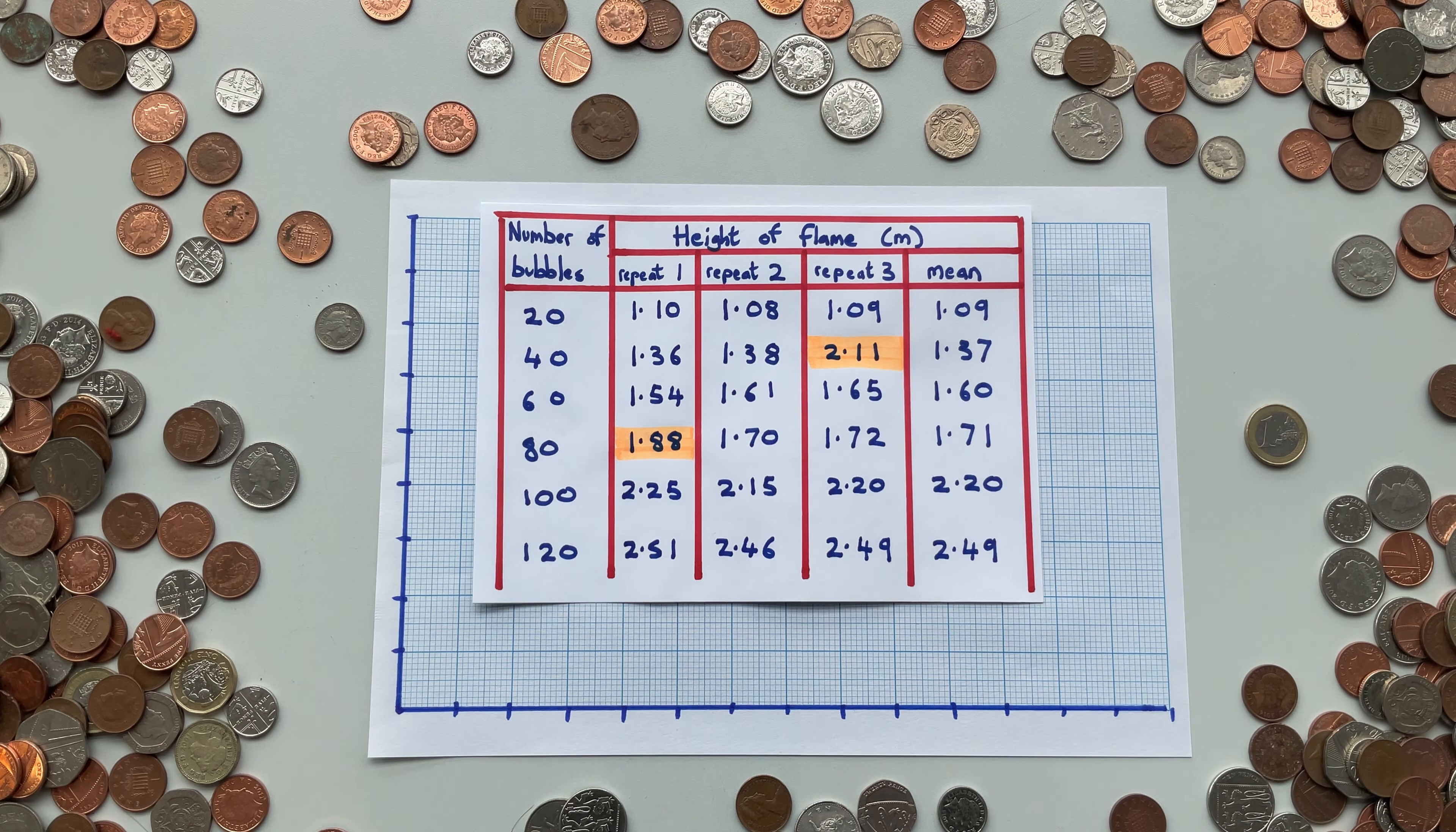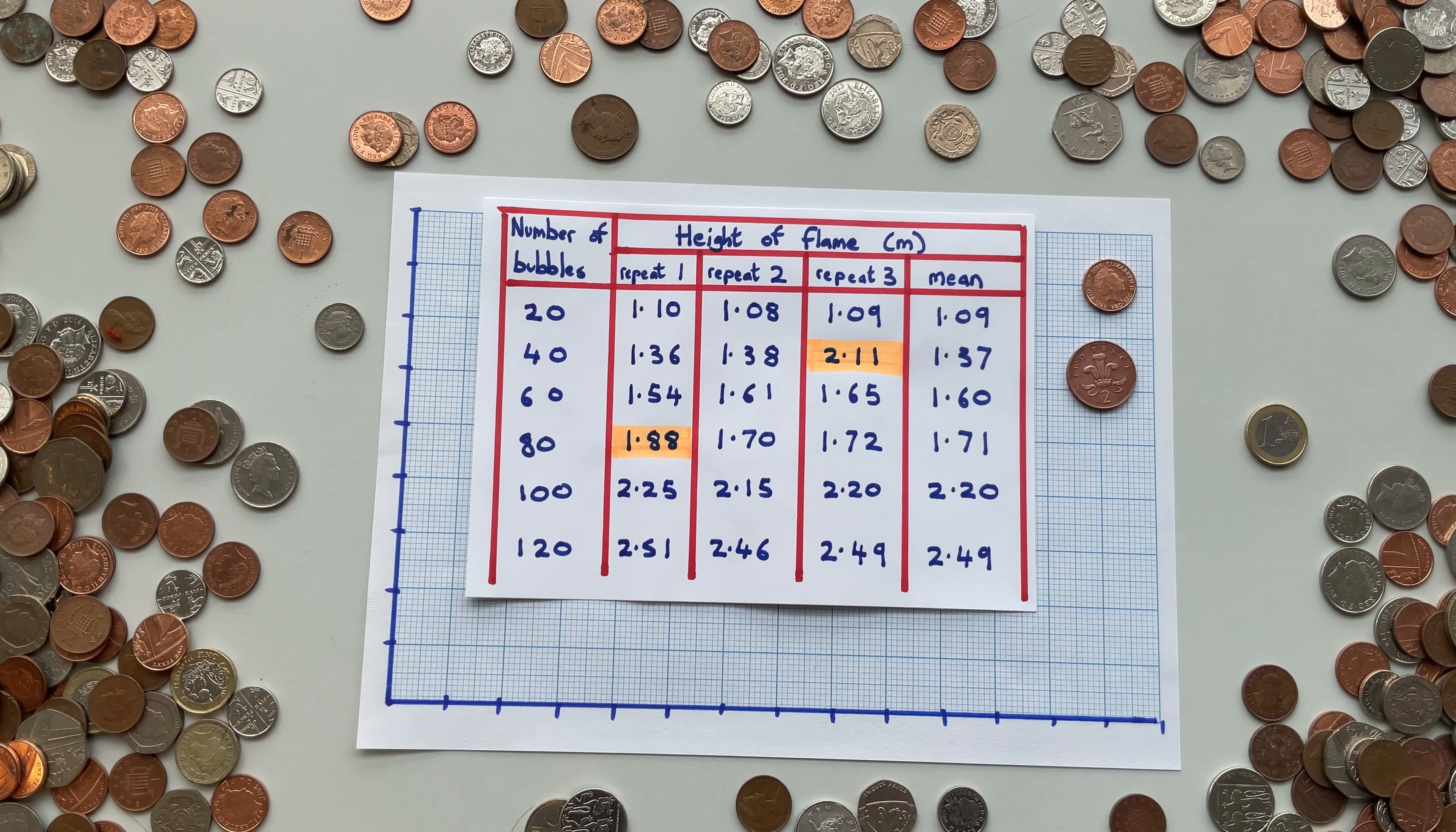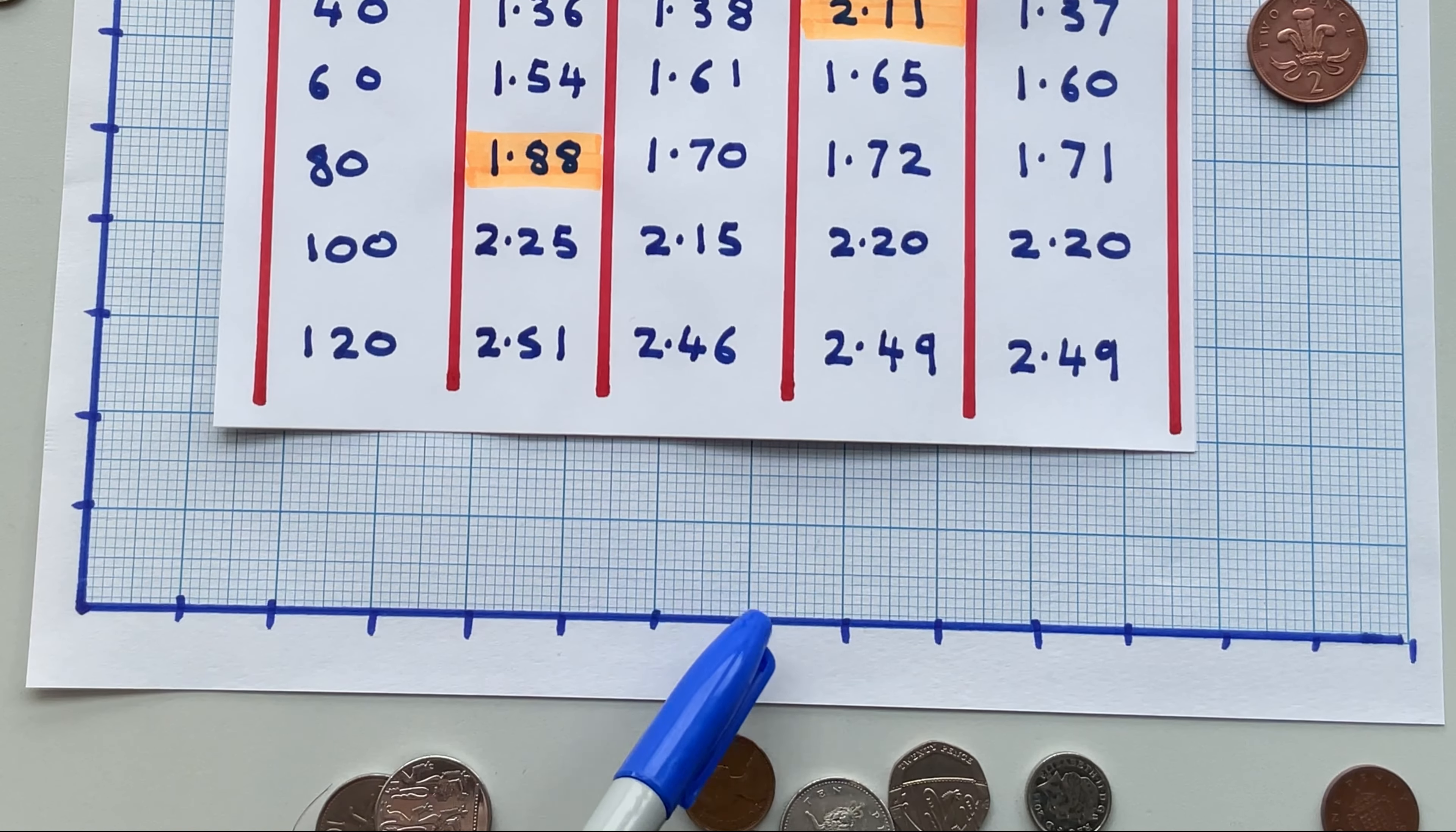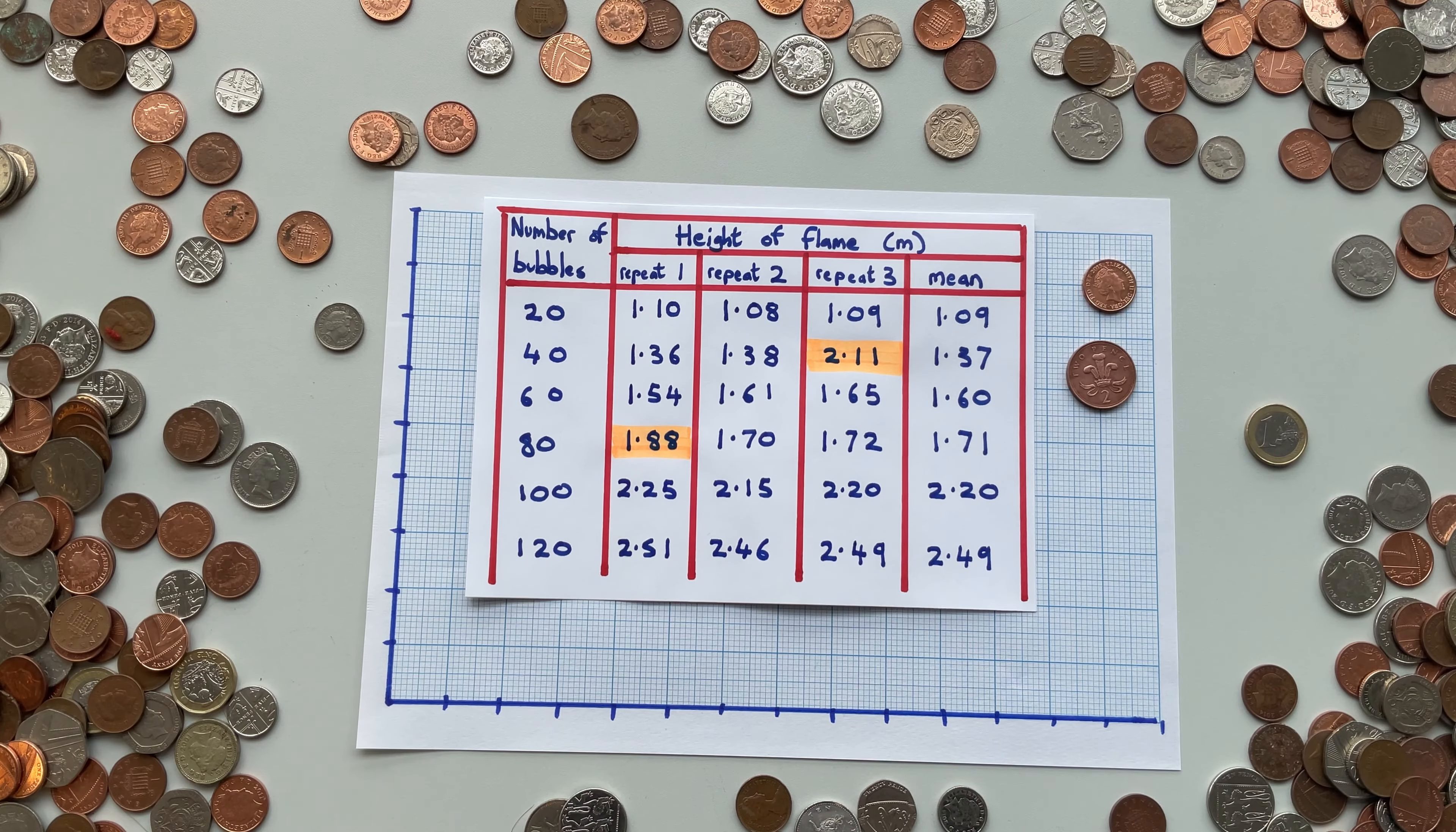So we need to make sure our scale includes both of those numbers, and this is where the coins come in. The first number we're gonna try counting up in is twos: 2, 4, 6, 8, 10, 12, 14, 16, 18, 20, 22, 24, 26, 28. No, didn't get there.